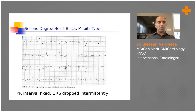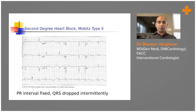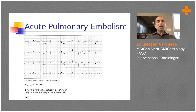This ECG shows a second-degree heart block. The PR interval is not progressively prolonged, but there are P waves not followed by QRS complexes — this is Mobitz Type 2 second-degree heart block.